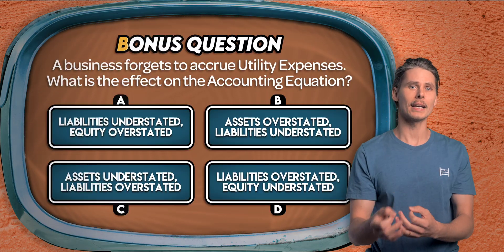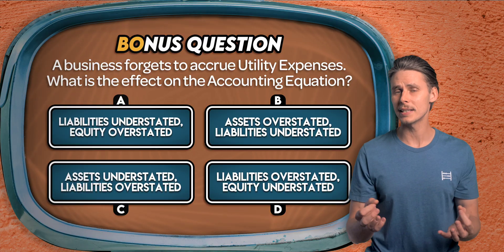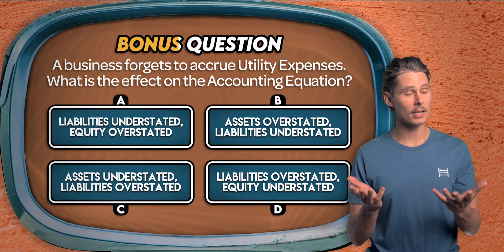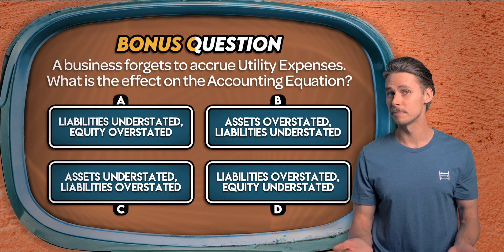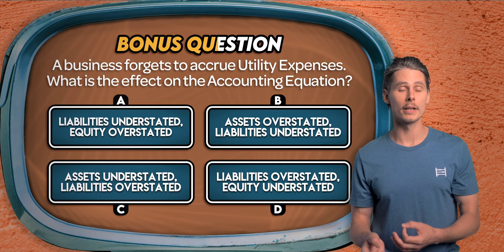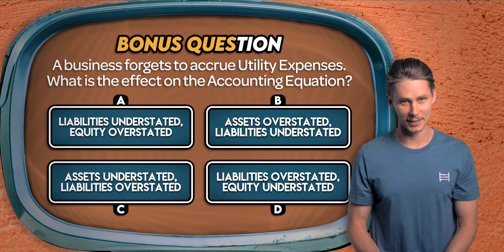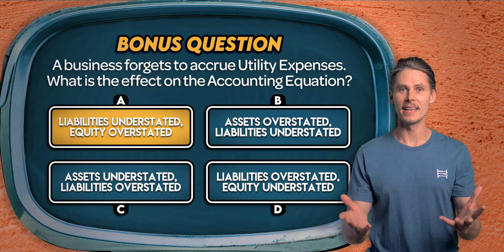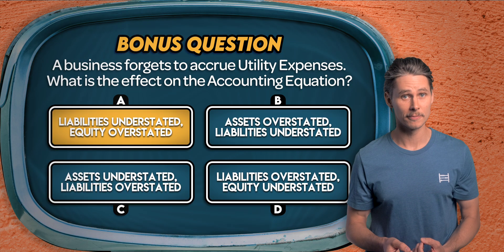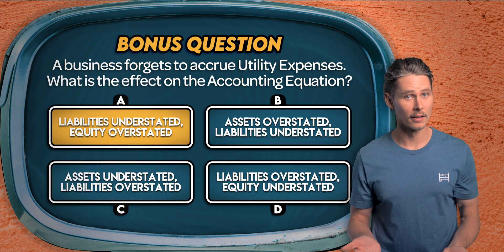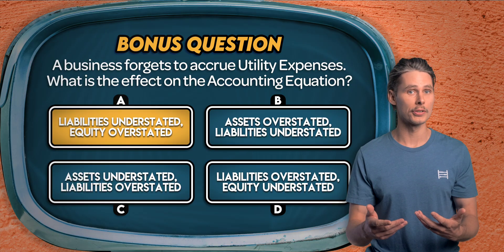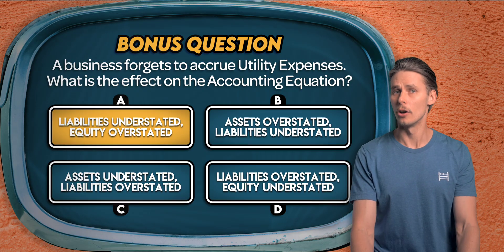Bonus Question. A business forgets to accrue utility expenses for the month. What is the effect on the accounting equation? Liabilities are understated and equity is overstated; assets are overstated and liabilities are understated; assets are understated and liabilities are overstated; or liabilities are overstated and equity is understated? It's A. When a business forgets to accrue utility expenses, both the expense and the related liability are missing. Liabilities are understated because the obligation hasn't been recorded, and expenses are also understated, which makes net profit and therefore equity overstated.